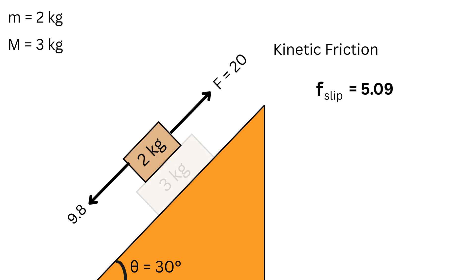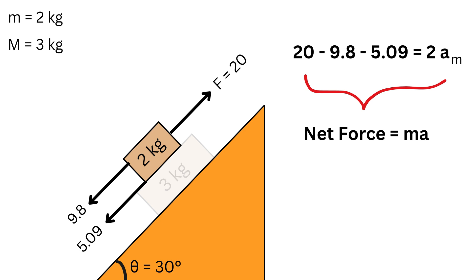First, let us calculate the acceleration of the top block. This friction f_slip acts down the slope on the small block. This is because the small block is pulled up relative to the big block or this surface. Therefore, this kinetic friction will try to stop this motion and will act downward. So we write F or 20 minus gravity pull or 9.8 minus f_slip or 5.09 equals small m or 2 times a_m, which is the acceleration of the top block.